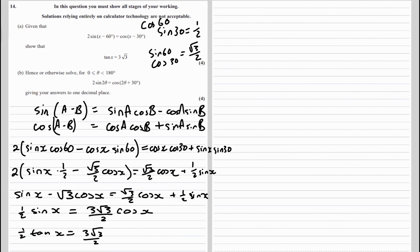What's happened here? What have we changed x into? So that x minus 60, x has changed into 2 theta, and x minus 30 has changed into 2 theta plus 30.